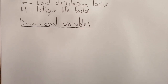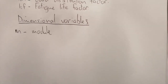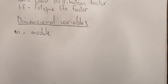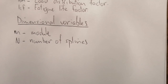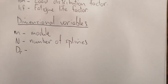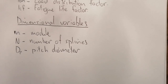Let's look at the dimensional variables. It's similar to gears and far fewer variables are required. M is for module — that's the module of the spline shaft. N is for the number of splines. We also have DP, known as the pitch diameter, which is central between the root and the tip of the spline.